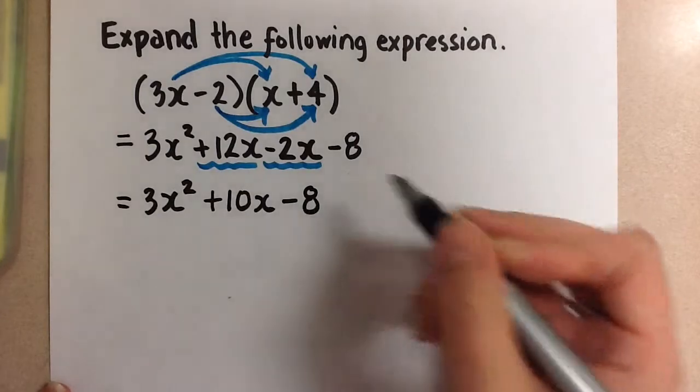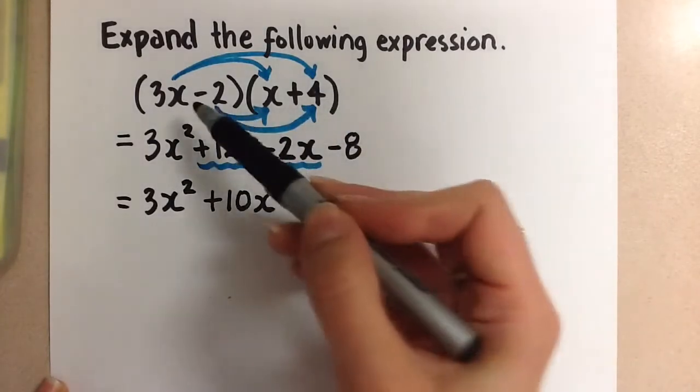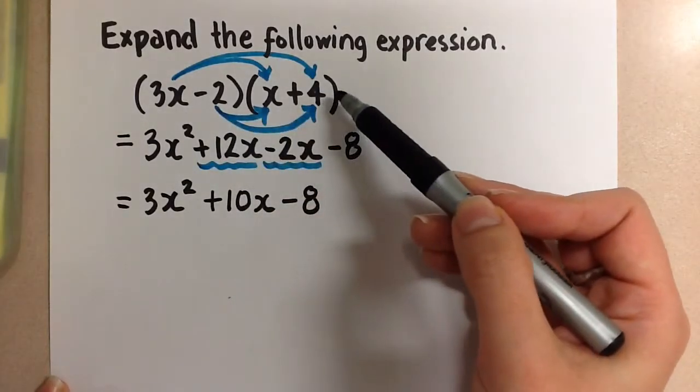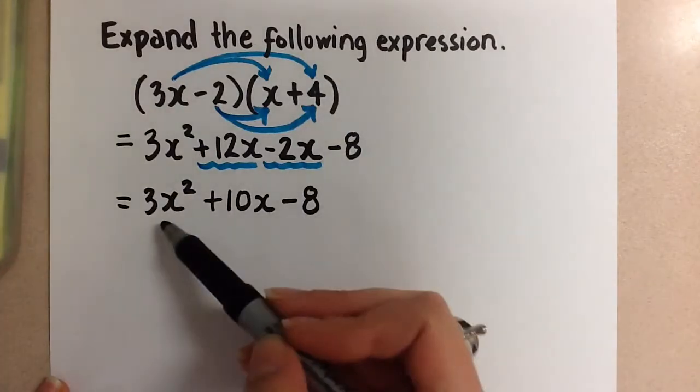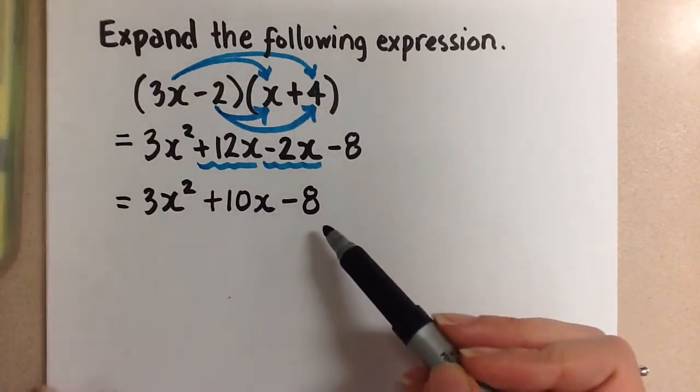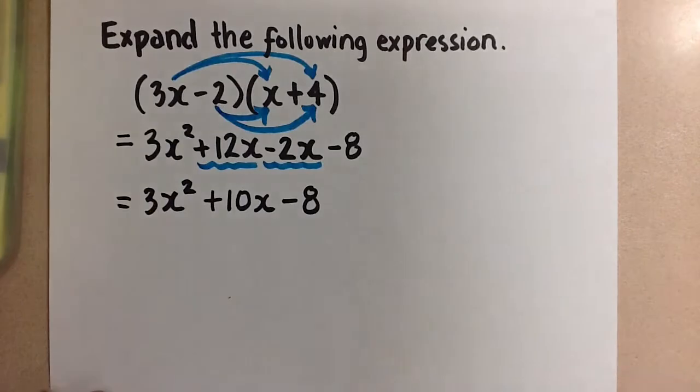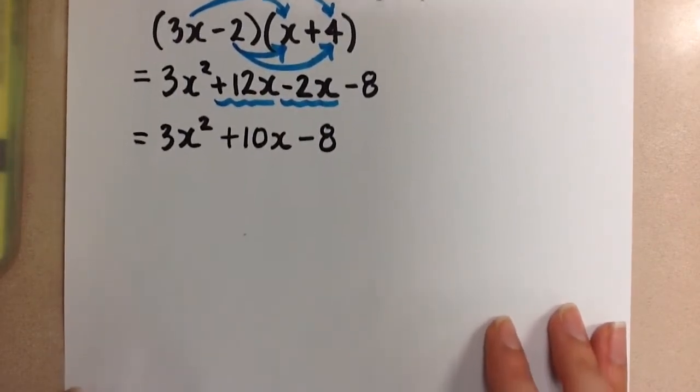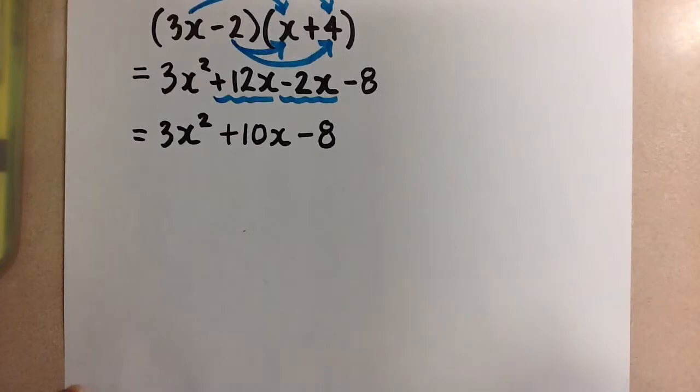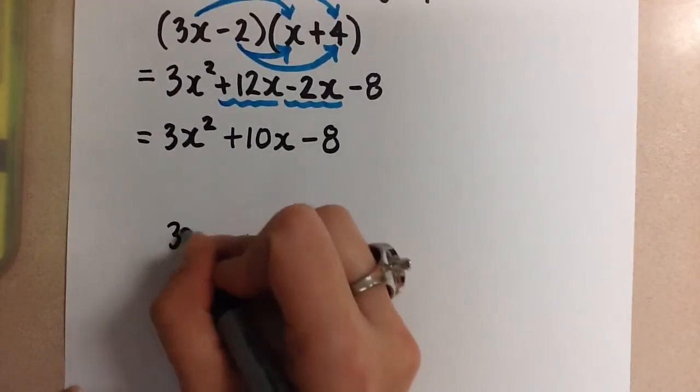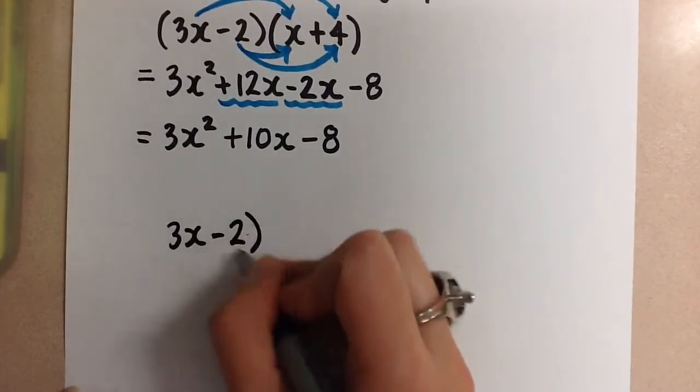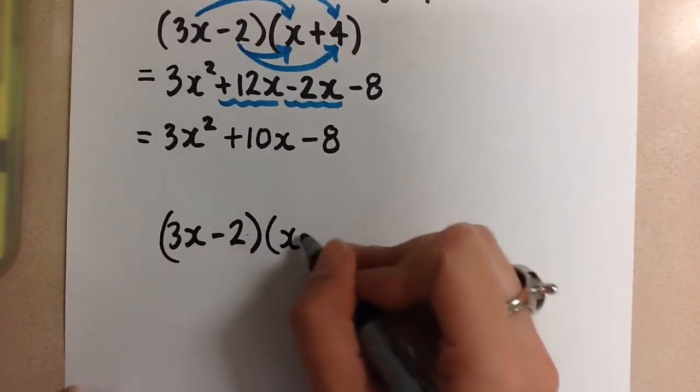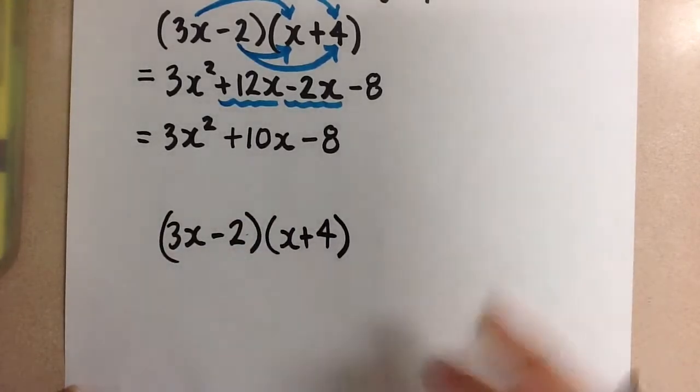And now we have completely expanded the two binomials using multiplication to get us a trinomial, which is a three-term polynomial. So that's using the regular distributive law. Now we're going to do this again using the chart method, because I know that some people need to see it visually. So let's write out the question again. 3x minus 2 times x plus 4.